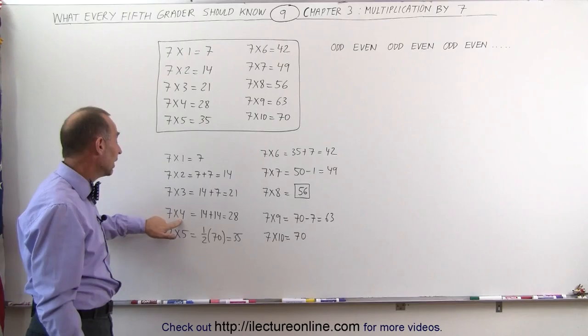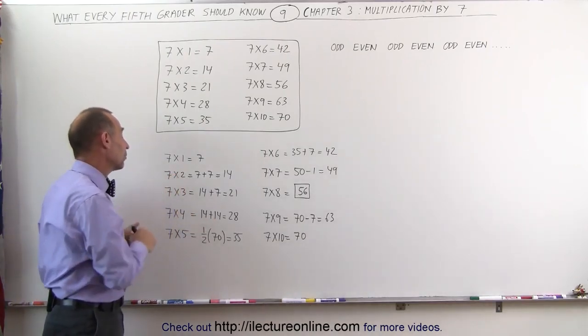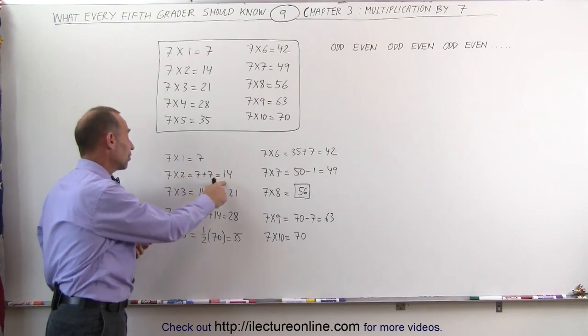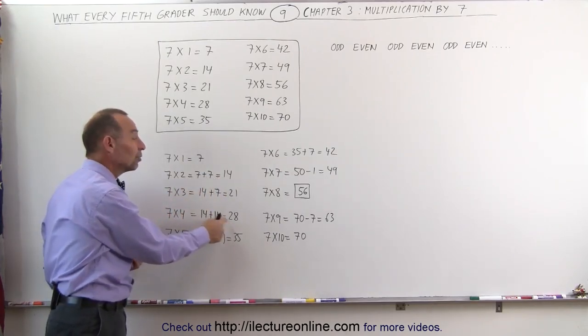7 times 4 is like twice 14, it's twice 7 times 2. Since 7 times 2 is 14, 7 times 4 is twice that, which would be 14 plus 14, which gives us 28.